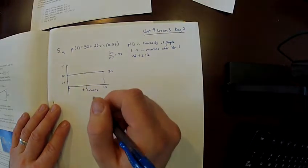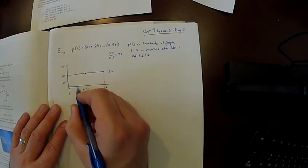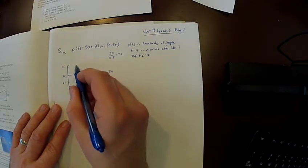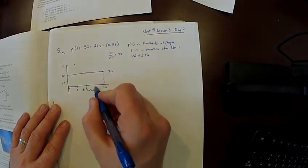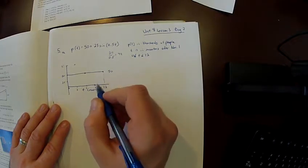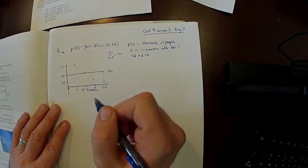I also know that at 6 months I should be back at that midline of 50,000, and at 12 months I'm back at the midline. I would know halfway between 0 and 6, or 3 months in, that I would reach a maximum of 75. I would also know that at a value of 9 months in, I should be at a minimum of 25.